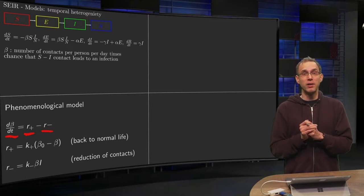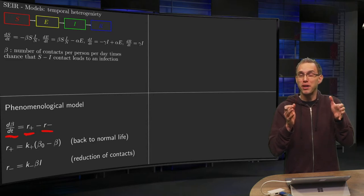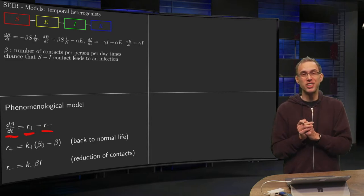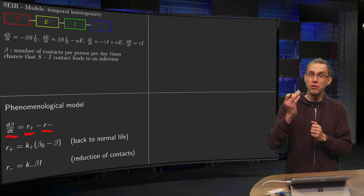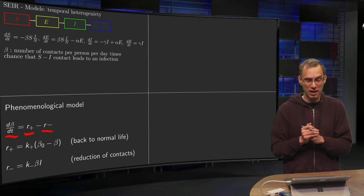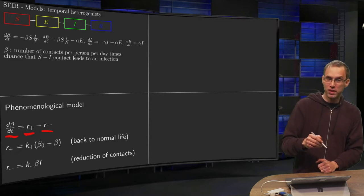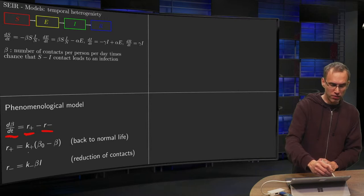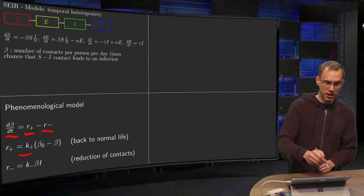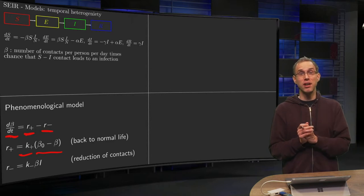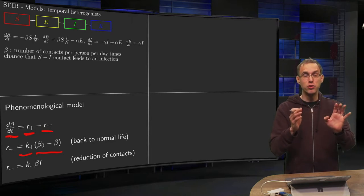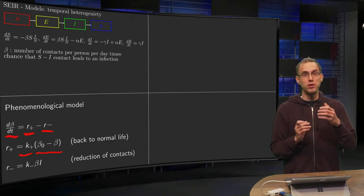Now we have to do something phenomenological. How would r plus typically look? We have r plus equals some constant k+ times (β₀ - β), where β₀ is the number of contacts if everything is normal.